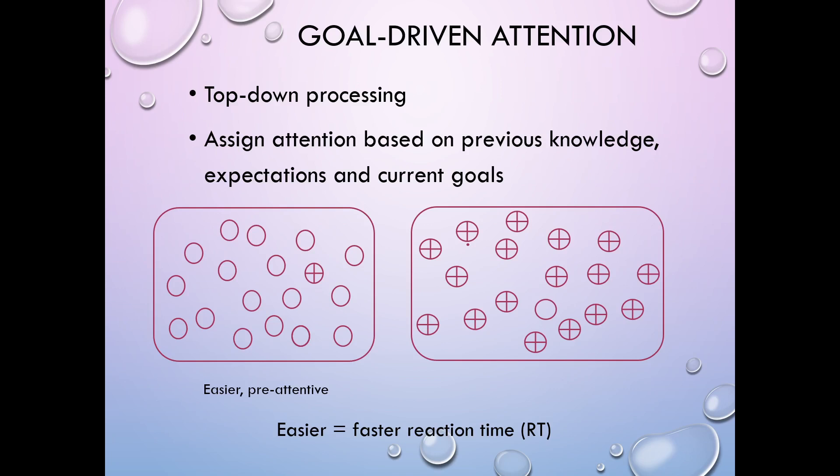The one on the left is done more as a pre-attentive process because it pulls your attention, whereas the one on the right is a harder, slower task. It'll take you a little bit longer because you're actually having to apply attention — actively looking for the one that's missing the plus sign.